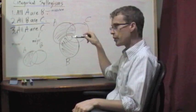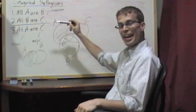We do that because we're trying to figure out whether the argument is valid. Now we've got this diagram here and our conclusion is that all A are C.